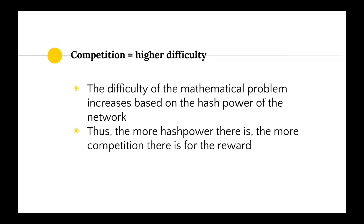The difficulty of the mathematical problem that miners need to solve increases based on the total hash power of the network. This is built into the Bitcoin code — if the problem is too easy, the code recognizes that and increases the difficulty based on how many people are mining blocks. Thus, when there's more hash power and more competition, it's much harder to get the reward.